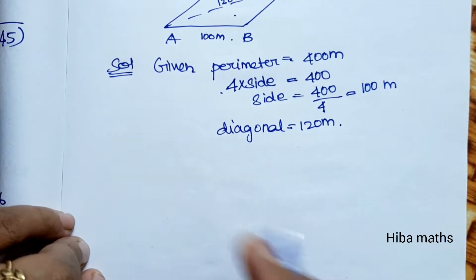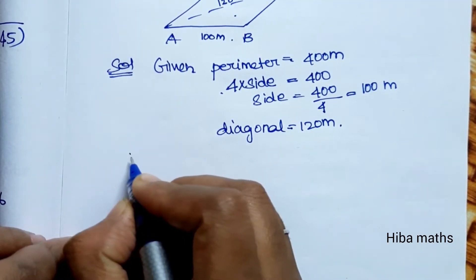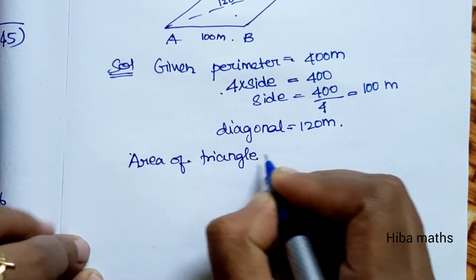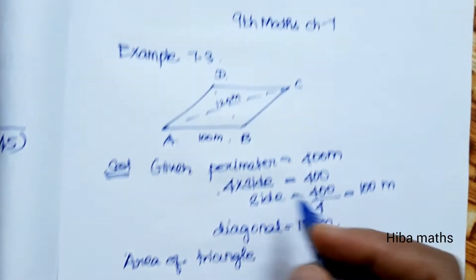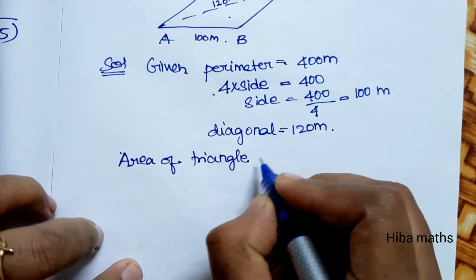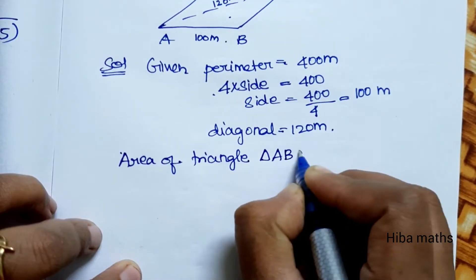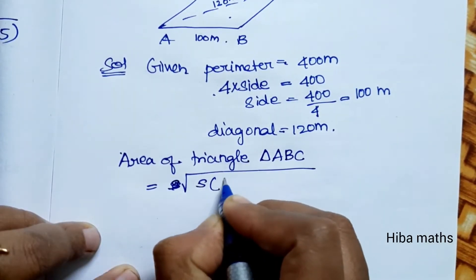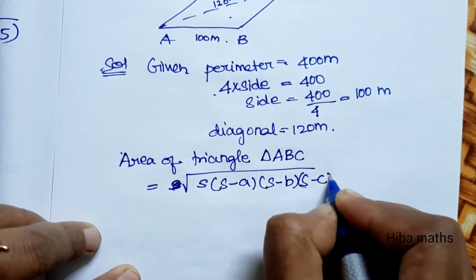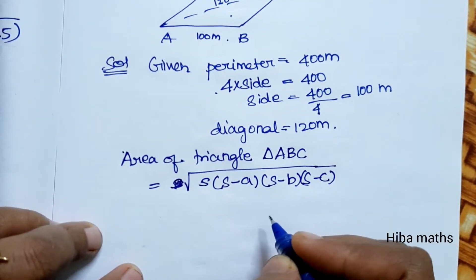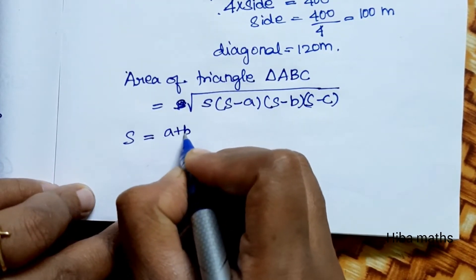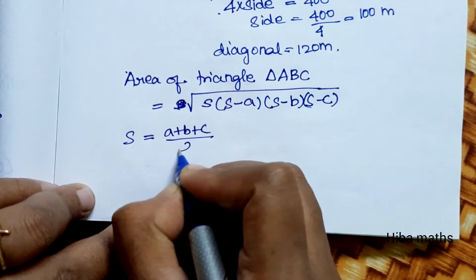Here is the formula. Heron's formula for the area of a triangle is square root of S times (S minus A) times (S minus B) times (S minus C). To find S, we calculate S equals (A plus B plus C) divided by 2.